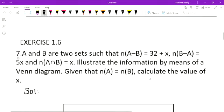7th sum. Okay, already we have seen up to 6th sum in last video. This is 7th one. A and B are two sets such that n(A-B) equals 32+x, n(B-A) equals 5x, and n(A∩B) equals x.